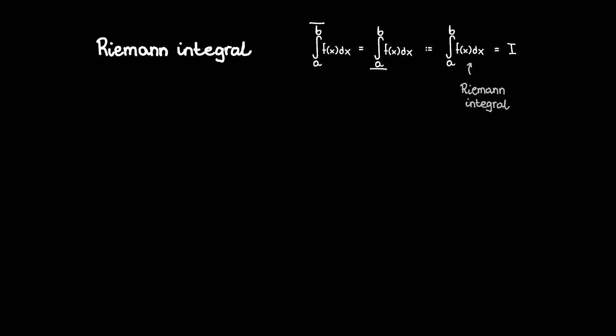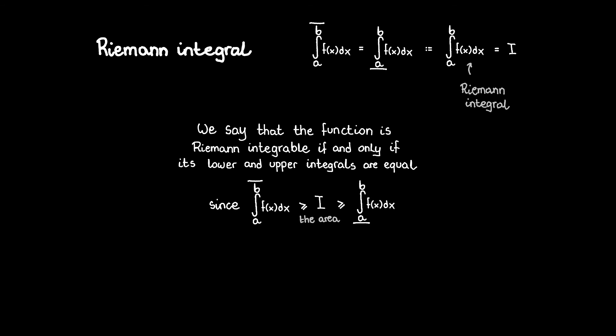We say that the bounded function is Riemann integrable if and only if its lower and upper integrals over a fixed interval are equal. Moreover, this means that the proper integral exists and is equal to lower and upper integrals. And the letter i we previously used for the surface area, now it can be replaced by a fully fledged symbol of the integral. Since lower and upper integrals are the lower and upper bounds of the area we are looking for, the value of the surface area follows from their equality.